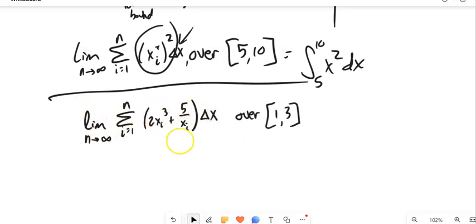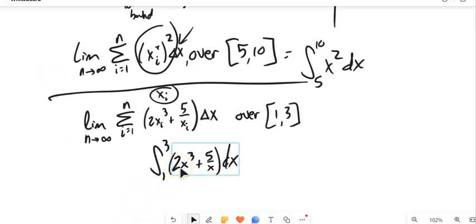Let me get another example up here. All right, so there is a sum and I'm telling you the interval. In future lecture, I'm not going to tell you the interval. I'll tell you how we can find it without it being given to us. But for now, we'll say it's given to us. And let's just write the equivalent definite integral for that. So the lower bound is 1, upper bound is 3. And notice that if x sub i is my input, here it is being cubed, two times it being cubed, and five divided by it. So my function should be 2x cubed plus five over x, and then that's being integrated with respect to x.